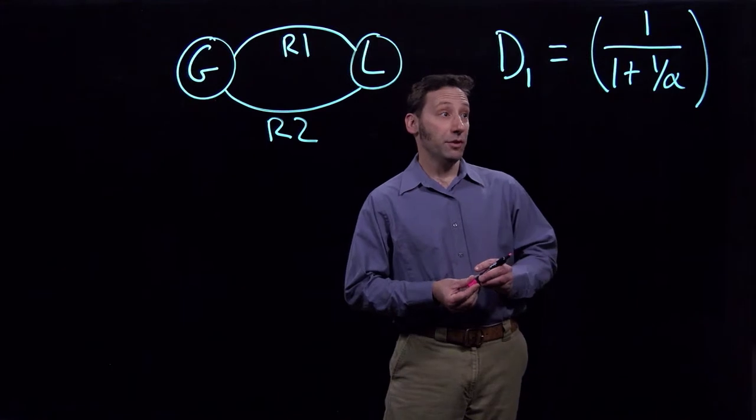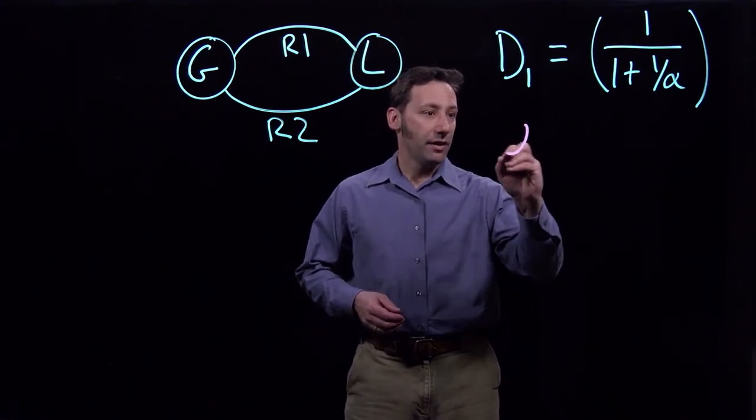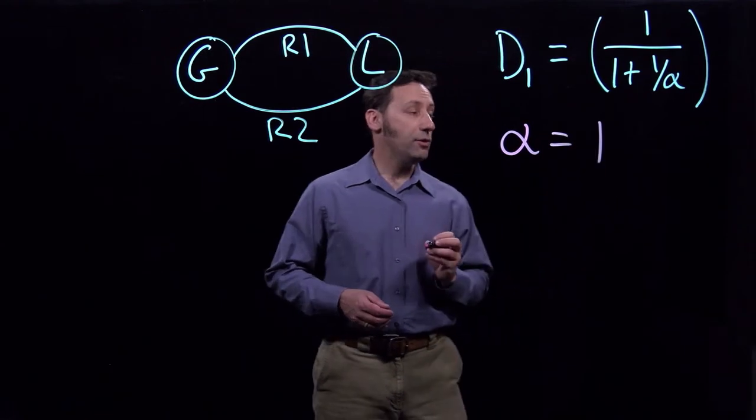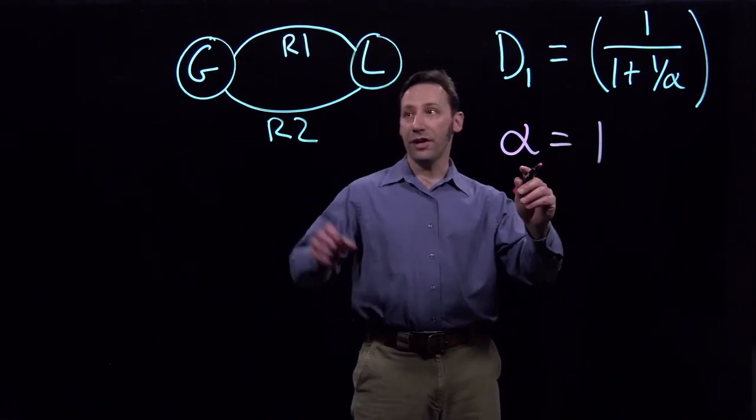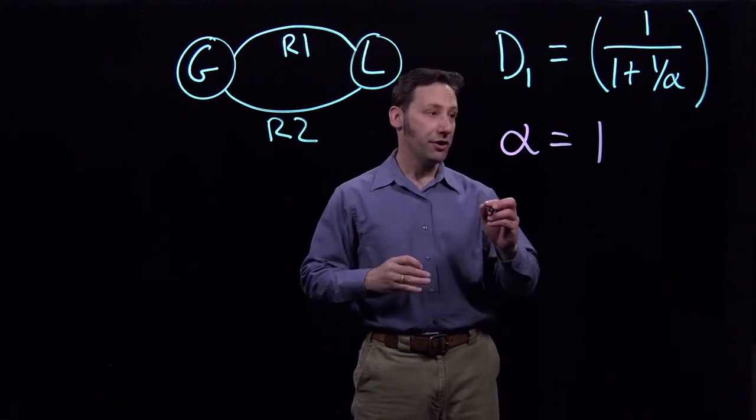Alright, so now we're going to do an example. And this example is going to have alpha equal to 1. And alpha is equal to 1 means that the two resistances are exactly the same. So R1 is equal to R2.